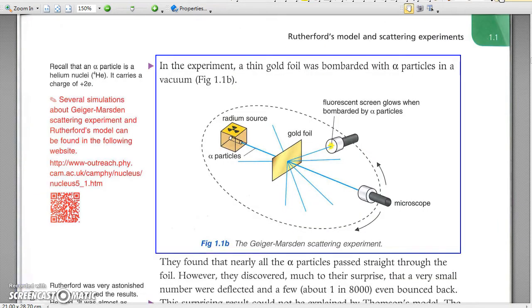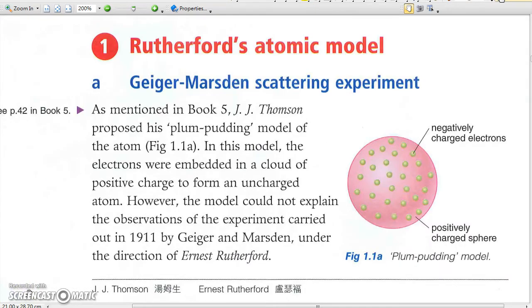The scattering experiment performed by two students of Rutherford suggested the existence of nuclei with concentrated mass and positive charges. The Geiger-Marsden scattering experiment.